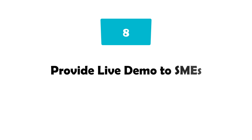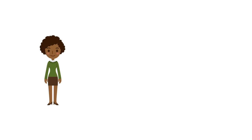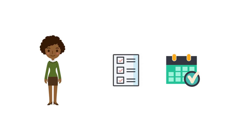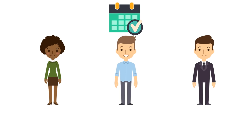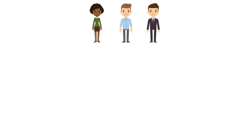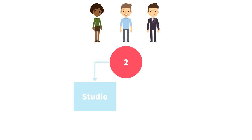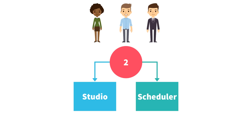Task number eight is to provide a live demo to the SMEs. After the business analyst has collected the test cases and the bot has been implemented by the developer, the business analyst plans a meeting to test the bot live. The following people are involved: the business analyst, the developer, and the SMEs. The test is carried out using the collected test cases. It is better to test the bot twice — first, step by step through the developer from the studio, and the second time from the scheduler without the developer doing anything on the bot, meaning the developer runs the bot from the scheduler, not from the studio.